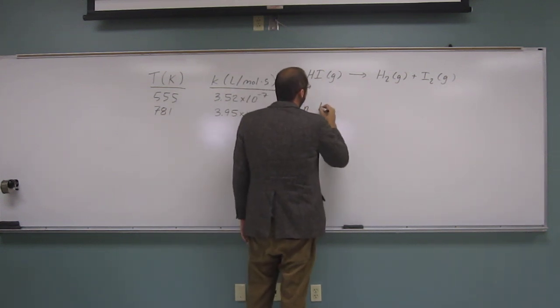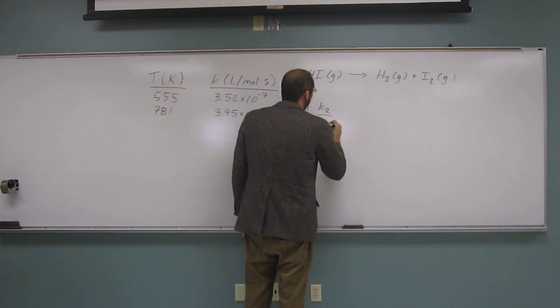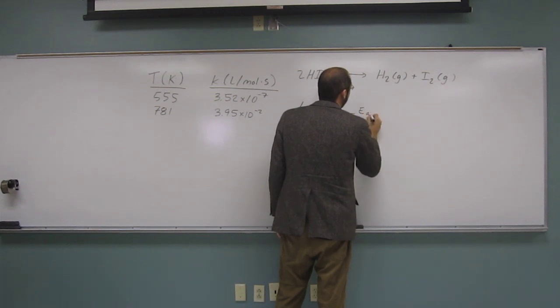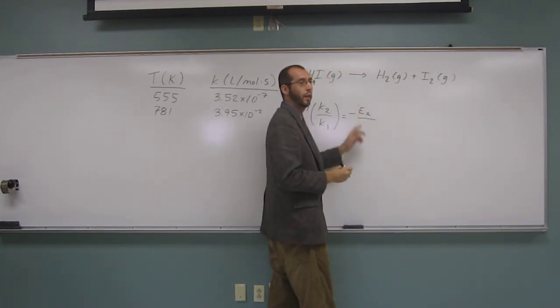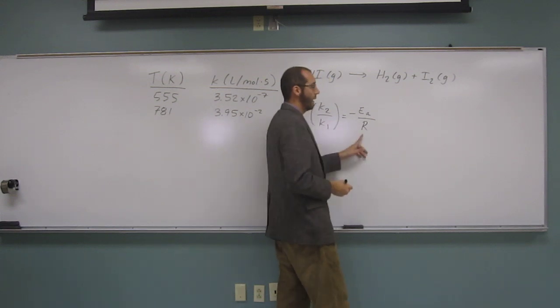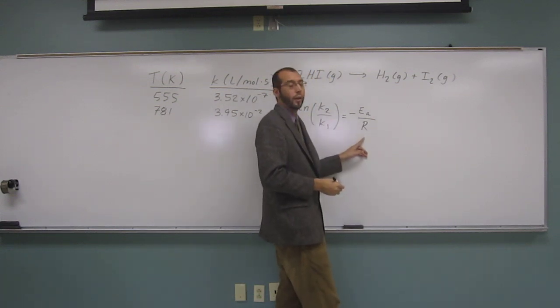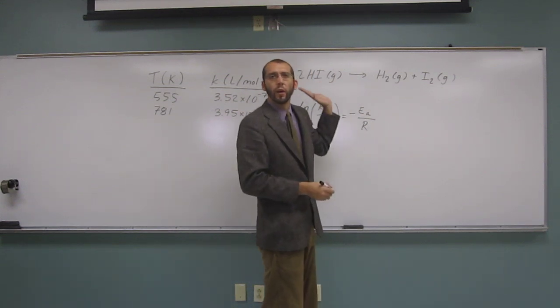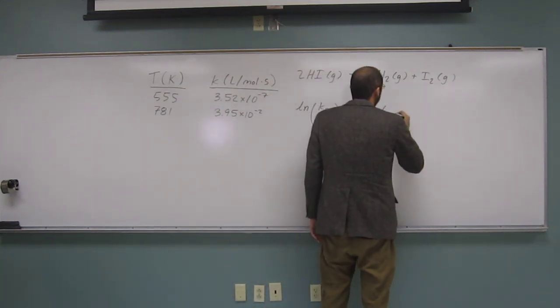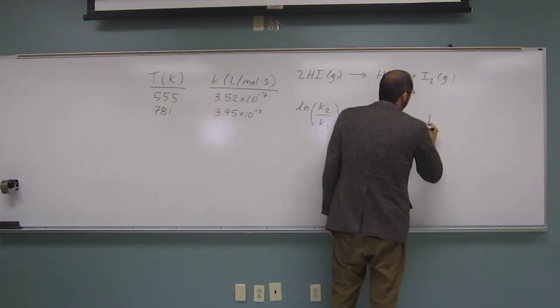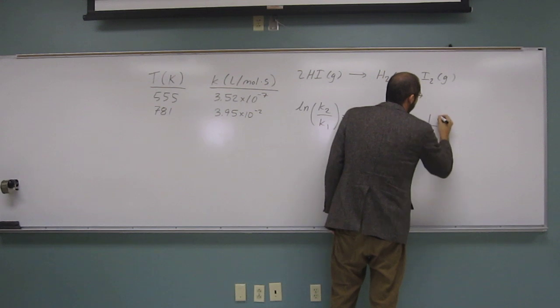So ln K2 over K1 equals the negative EA, so that's the activation energy, so that's what you're looking for. So R, that's the gas constant, 8.314, so that will be given to you. I'll write it down for you in a second. So 1 divided by T2 minus 1 divided by T1.